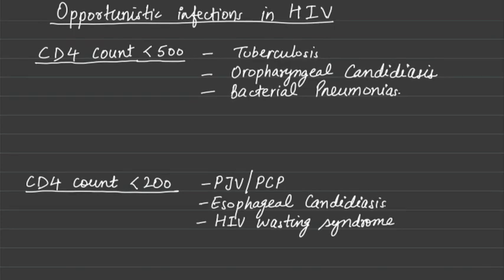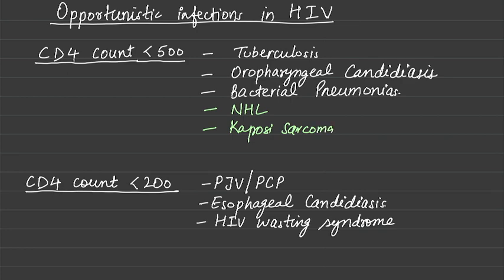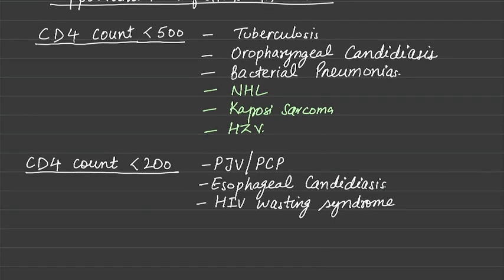This is all about memorizing the CD4 count. When it is less than 500 cells per microliter, the most common infections are tuberculosis, oropharyngeal candidiasis, bacterial pneumonia, non-Hodgkin's lymphoma, and Kaposi sarcoma.